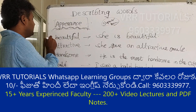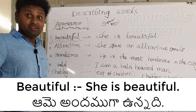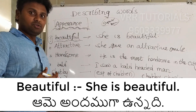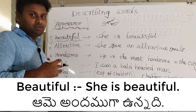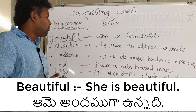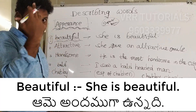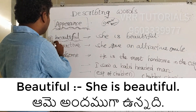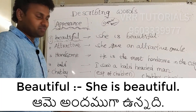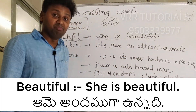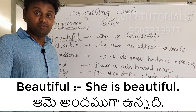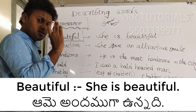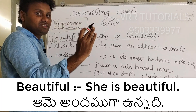The first word is 'beautiful'. When you say 'beautiful', your facial expression should be visible because it's a positive word. Beautiful — we generally know what it means. We say 'she's beautiful' or 'it's beautiful'. Generally, when we describe a woman's beauty, we use the word 'beautiful'.